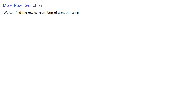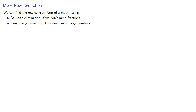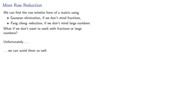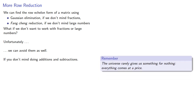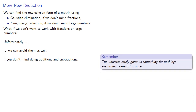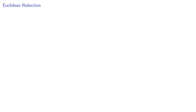We can find the row echelon form of a matrix using Gaussian elimination, if we don't mind fractions, or Fang Cheng reduction, if we don't mind large numbers. What if we don't want to work with fractions or large numbers? Unfortunately, we can avoid them as well, if you don't mind doing additions and subtractions. The universe rarely gives us something for nothing — everything comes at a price. To avoid fractions and large numbers, we'll rely on the Euclidean algorithm.